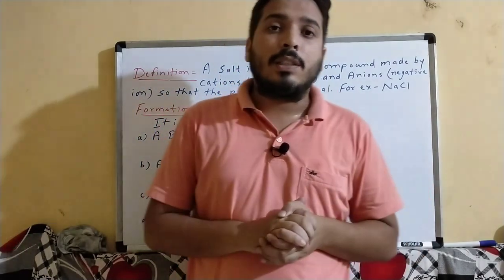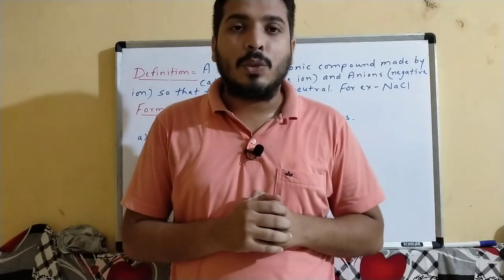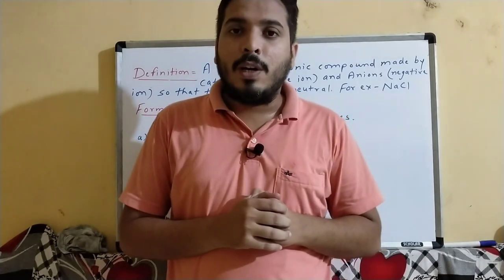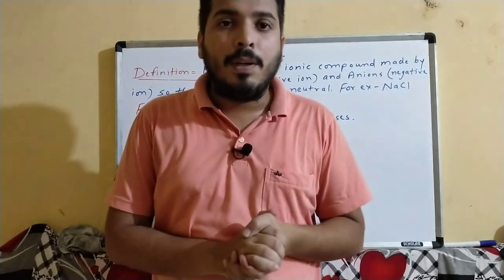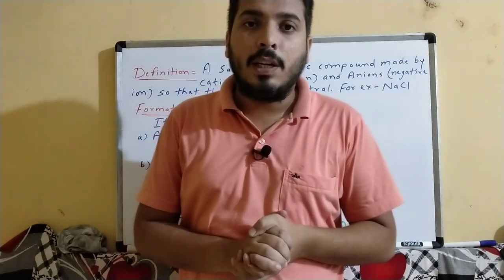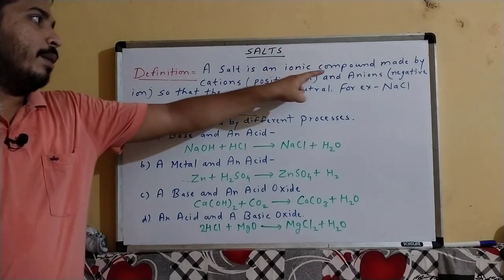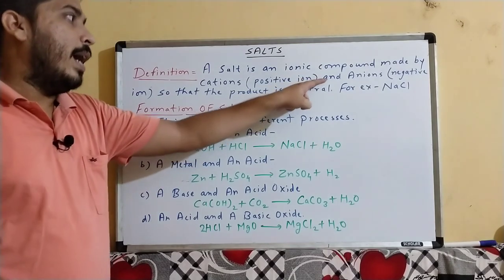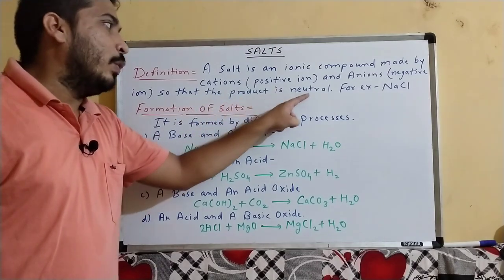Today we will discuss about salt. Salt is a neutral substance. Salt is an ionic compound made by cations — also called positive ions — and anions — also called negative ions — so that the product is neutral.